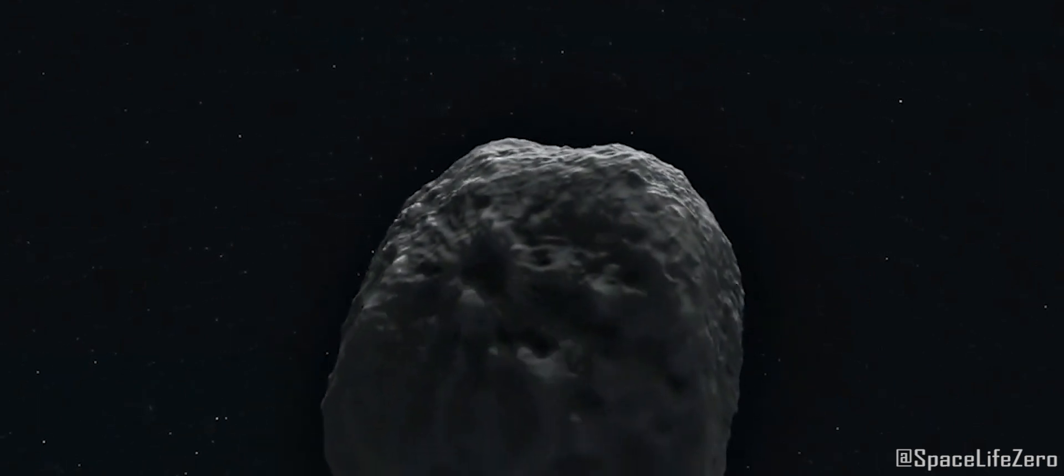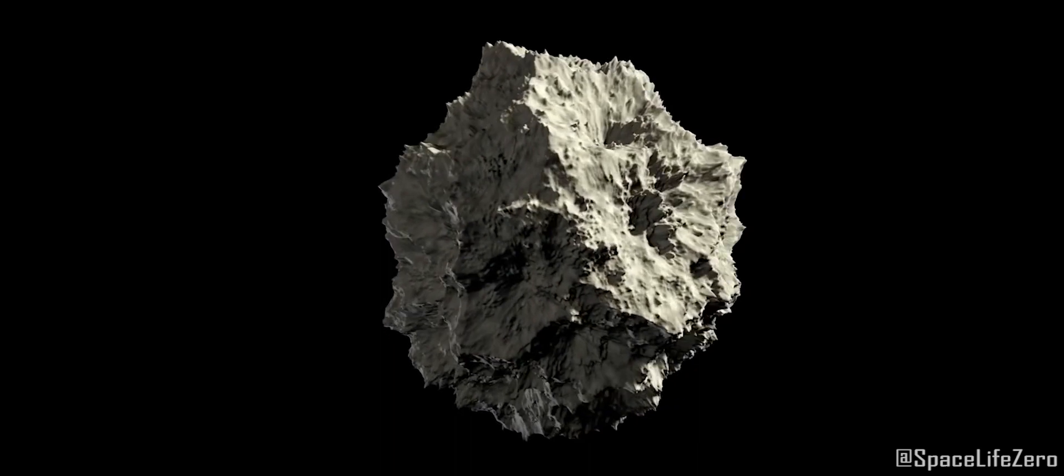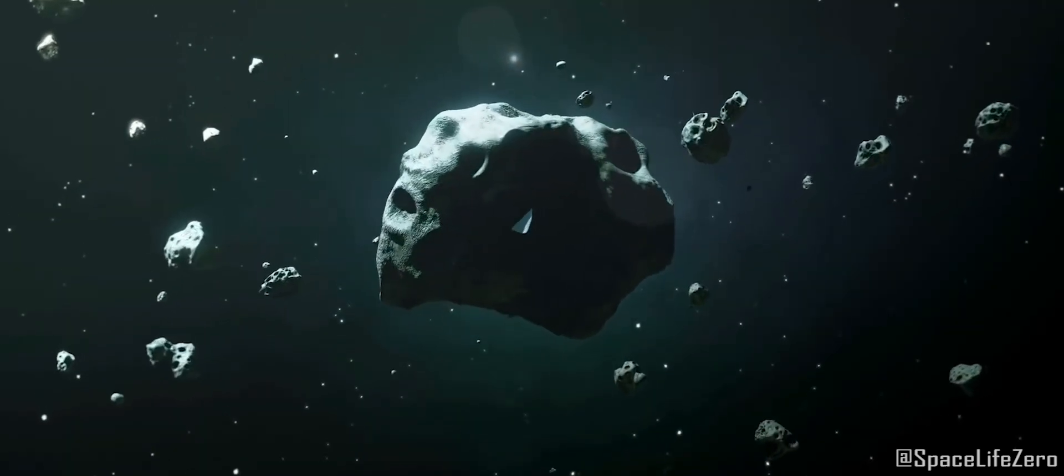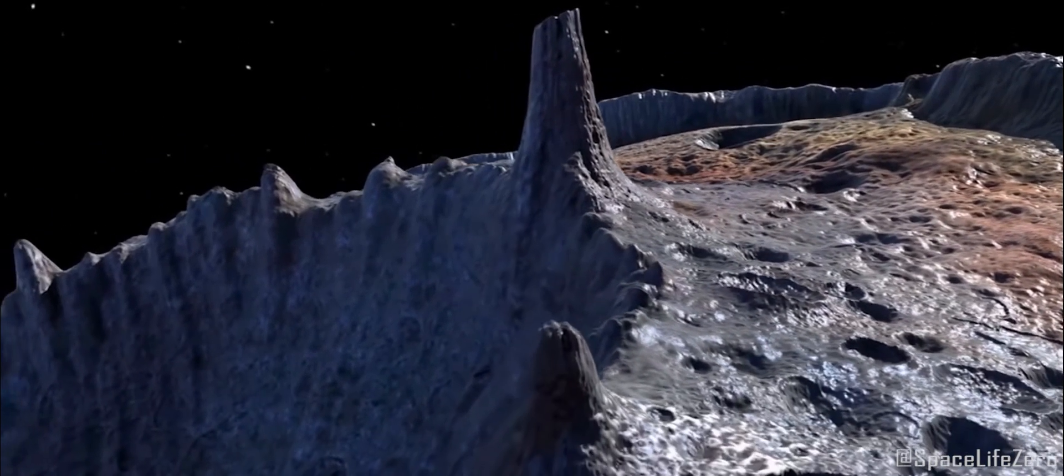Asteroid 2009 UG was first discovered on October 16, 2009, and it belongs to the Aten Group. The diameter of this asteroid is estimated in the range from 58 to 130 meters.